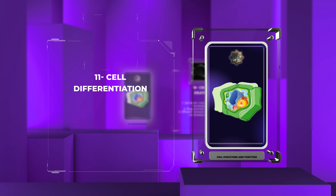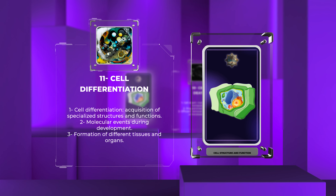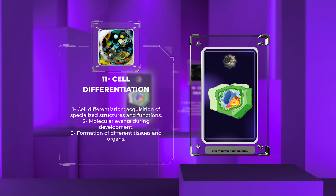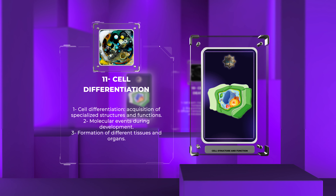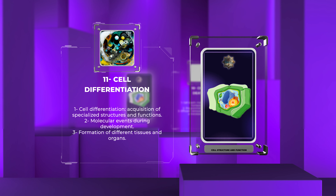Cell differentiation refers to the process by which cells acquire specialized structures and functions. During development, cells undergo a series of molecular events that result in their diversification into various cell types. This process is tightly regulated and allows for the formation of different tissues and organs in multicellular organisms.